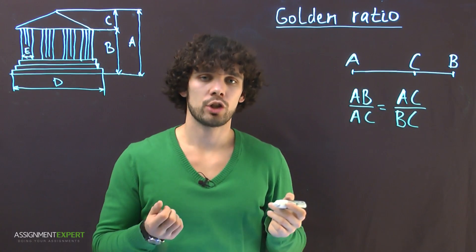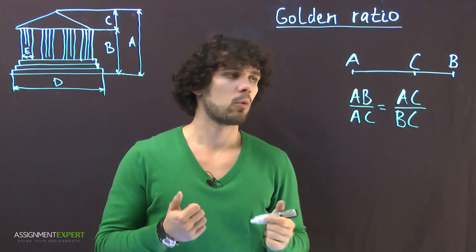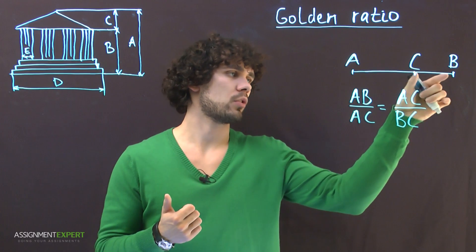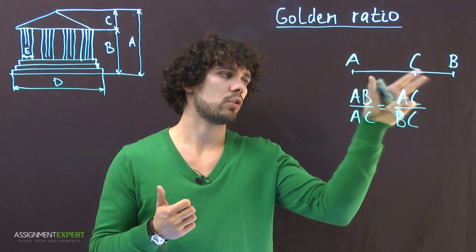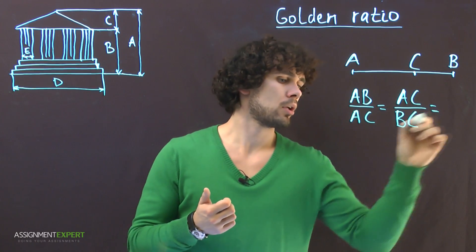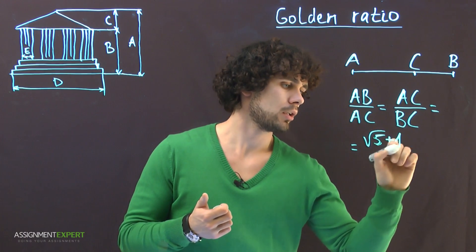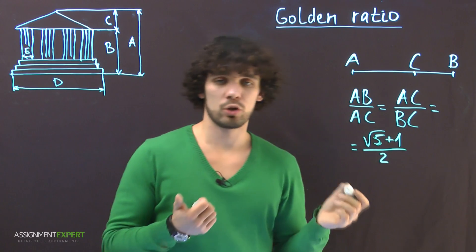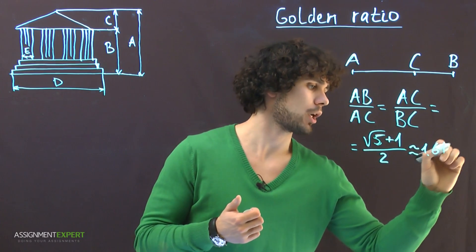So, golden ratio is the division of a quantity into two unequal parts, whereas the bigger part refers to the smaller part in the exact same way as the whole quantity refers to the bigger part. This reference is a rational fraction (√5+1)/2, which gives us approximately 1.618.